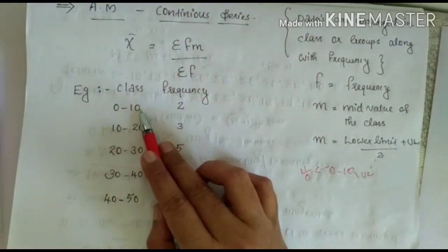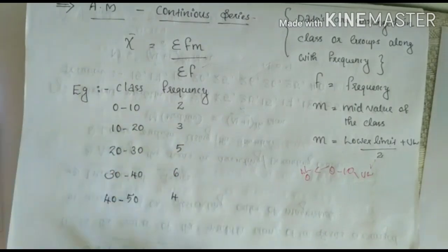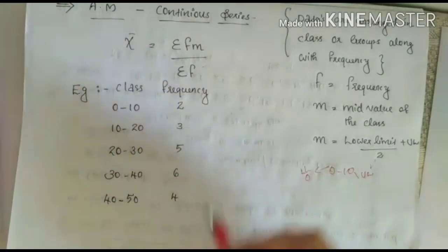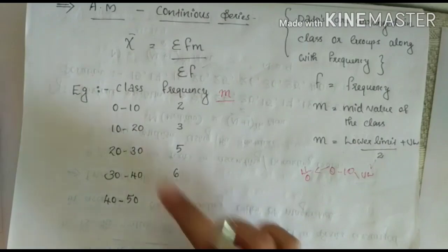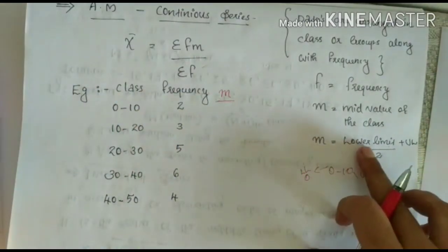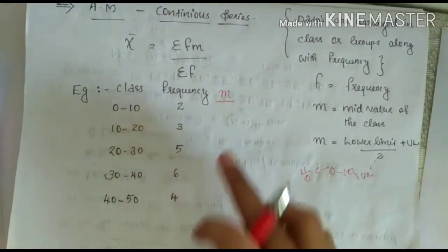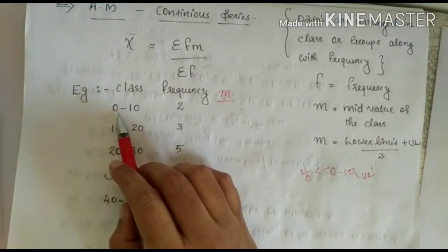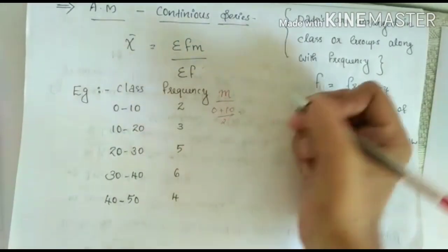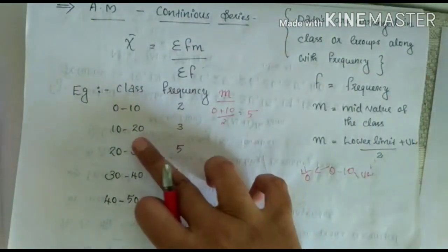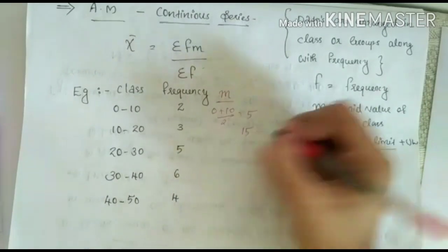For the class 0 to 10, lower limit is 0 and upper limit is 10, so mid value = (0 + 10) / 2 = 5. For the next class 10 to 20, lower limit is 10 and upper limit is 20, so mid value = (10 + 20) / 2 = 15.